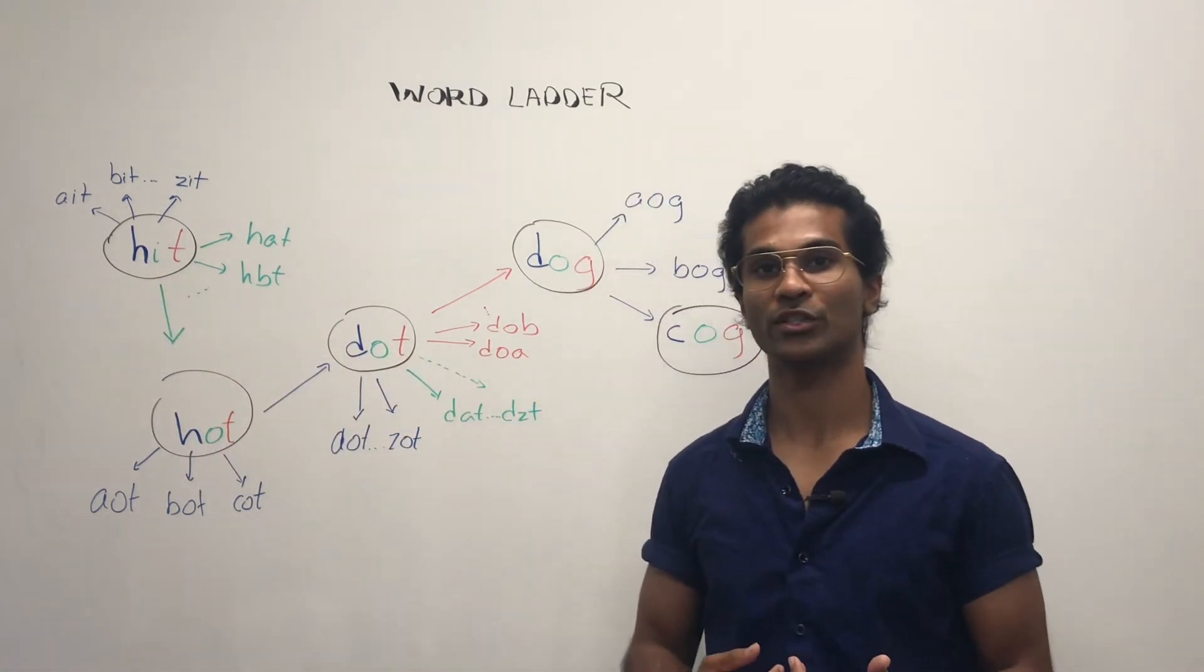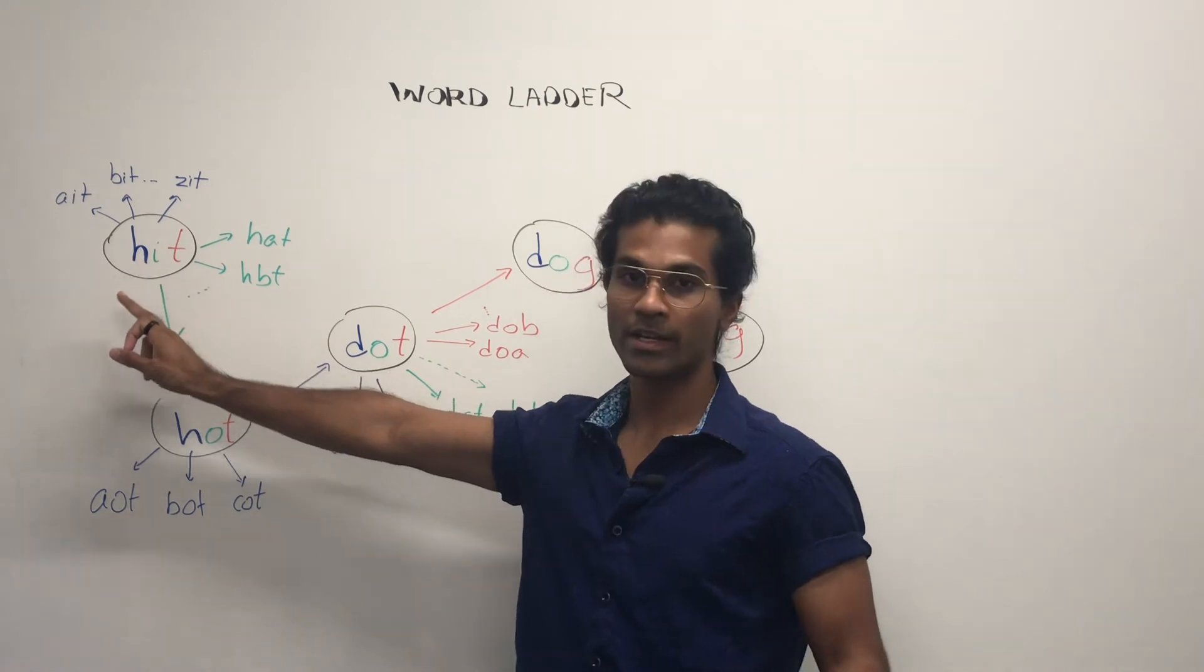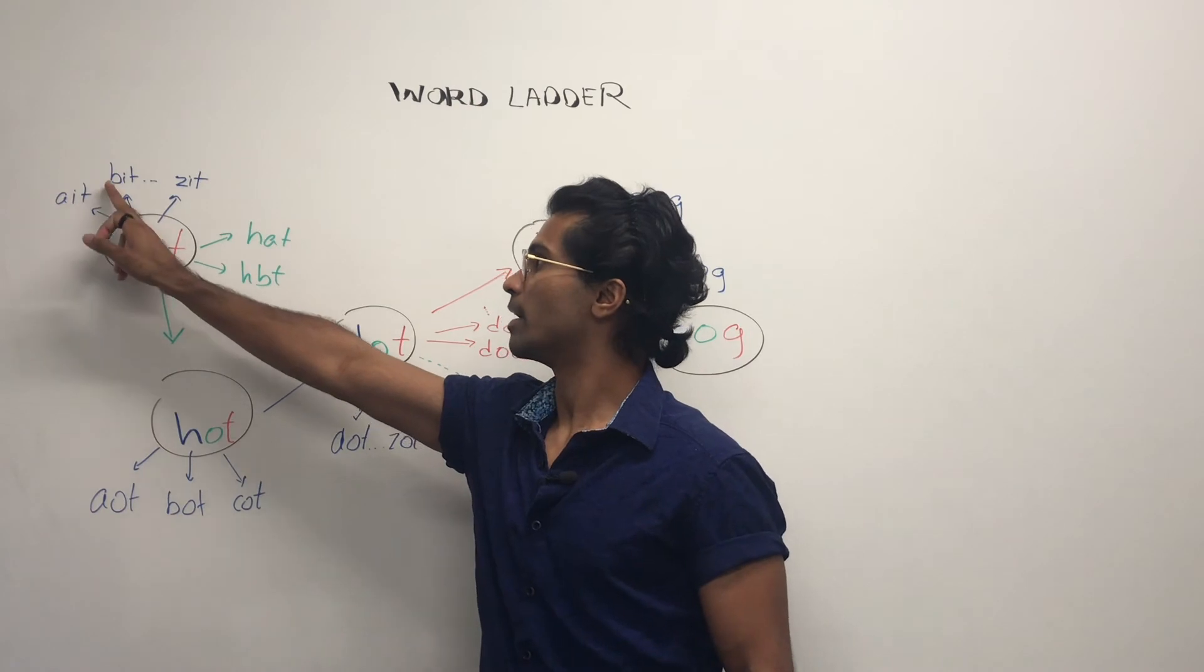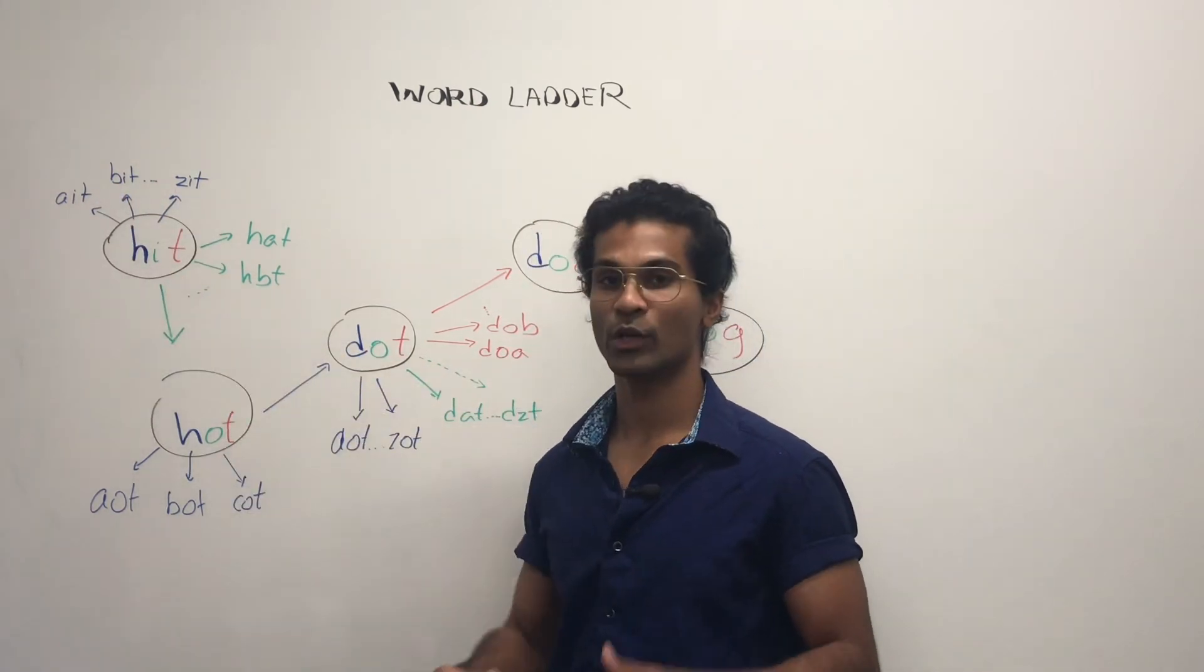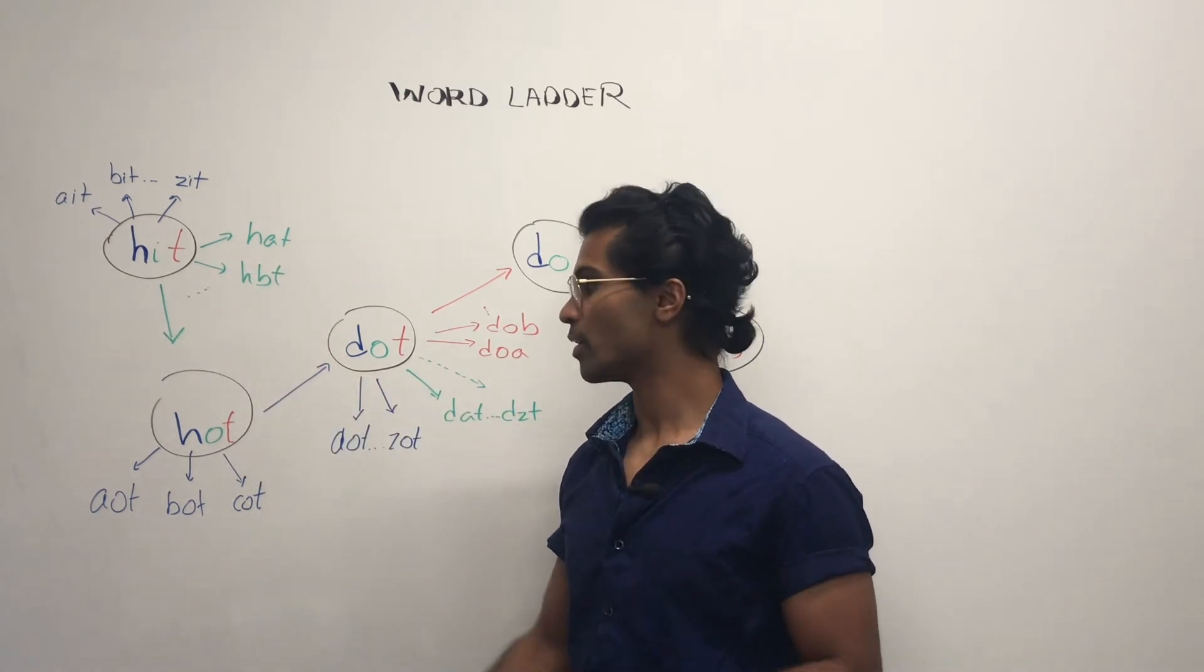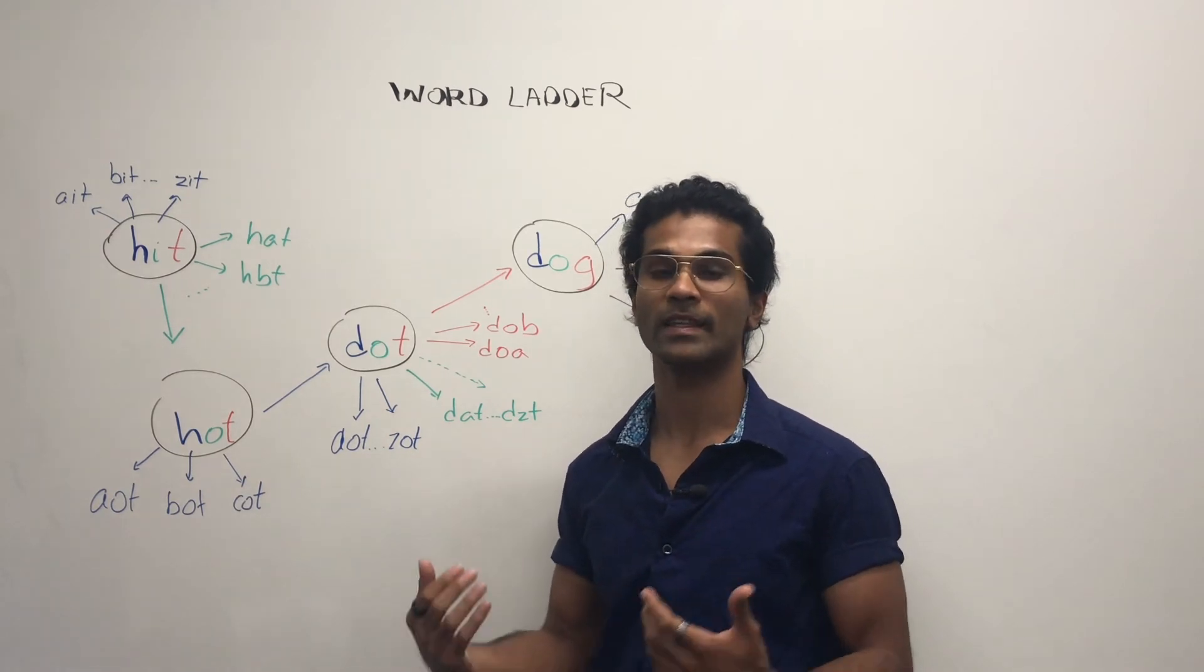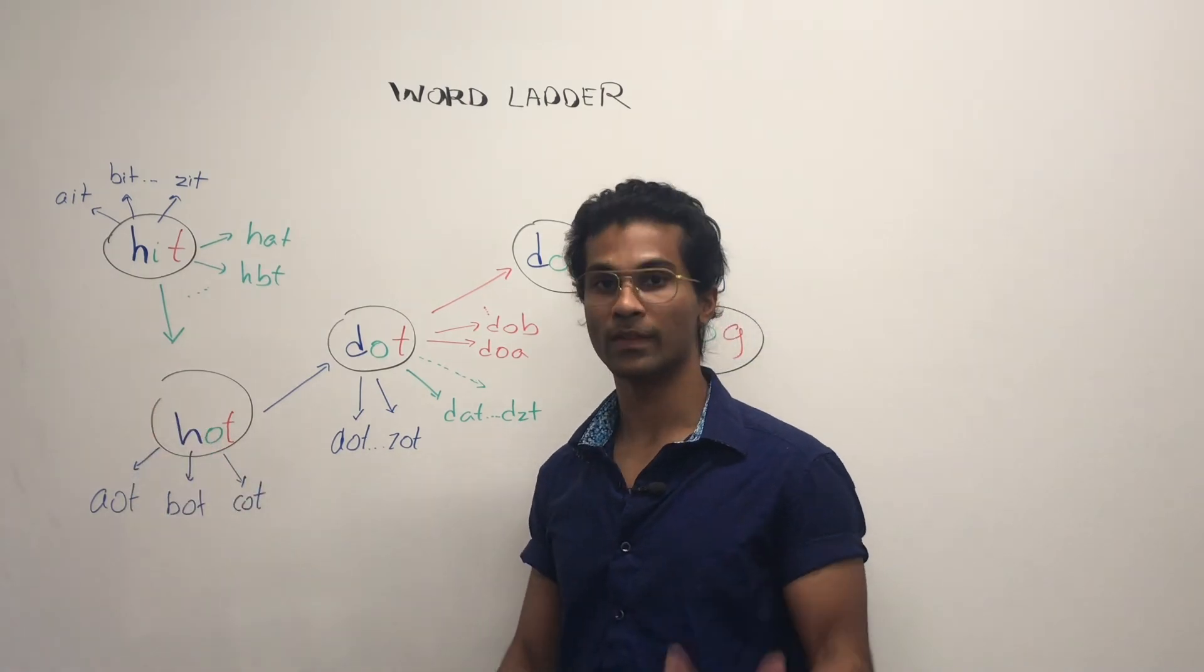So HIT is going to generate its neighbors. First we take the letter H and we swap it out for the 26 letters in the alphabet. So AIT, BIT all the way to ZIT and we swap it out. HAT, HBT etc. Then we actually hit HOT because HOT is a word in our list. Now we found one and we can put it in the queue.